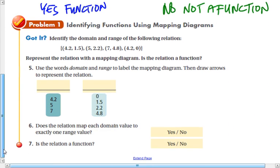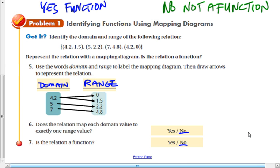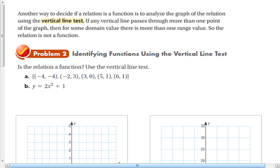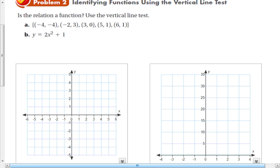You can try this problem 1. Another way to decide if a relationship is a function is to analyze the graph of the relationship using the vertical line test. If any vertical line passes through more than one point on the graph for some domain value, that means there is more than one range value for that domain value, so it would not be a function. So I'll show you how to do that here. We're going to graph two things. The first thing is just a bunch of points to graph, and the second thing is an equation to graph. Go ahead and put those points on the graph, and then I'll talk about how you use the vertical line test.